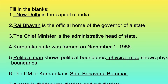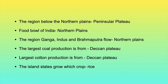The CM of Karnataka is Sri Basavaraj Bommai. The region below the northern plains is the Peninsular Plateau. The food bowl of India is the northern plains. The Ganga, Indus and Brahmaputra flow in the northern plains. The largest coal and cotton production in India is from the Deccan Plateau.